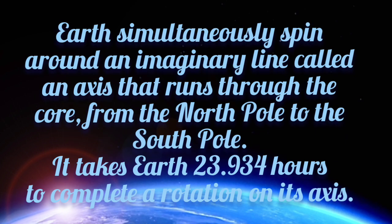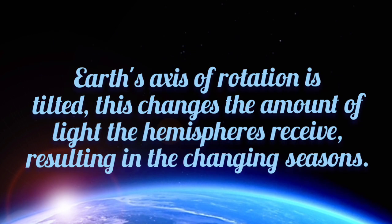Earth simultaneously spins around an imaginary line called an axis that runs through the core from the north pole to the south pole. It takes Earth 23.934 hours to complete one rotation. Earth's axis of rotation is tilted.